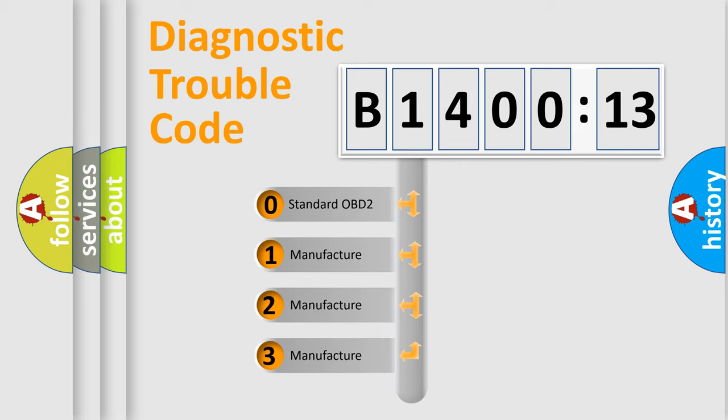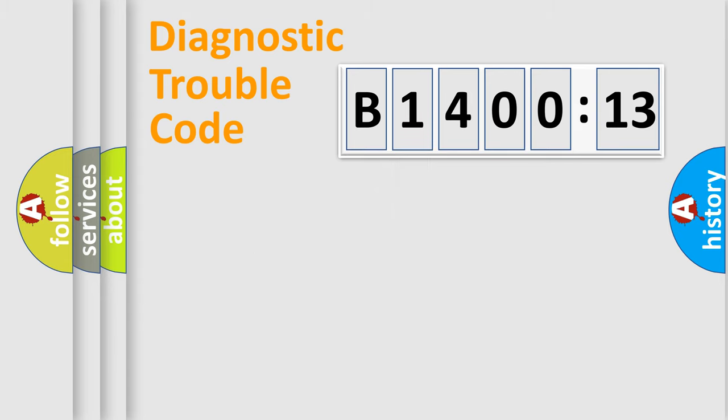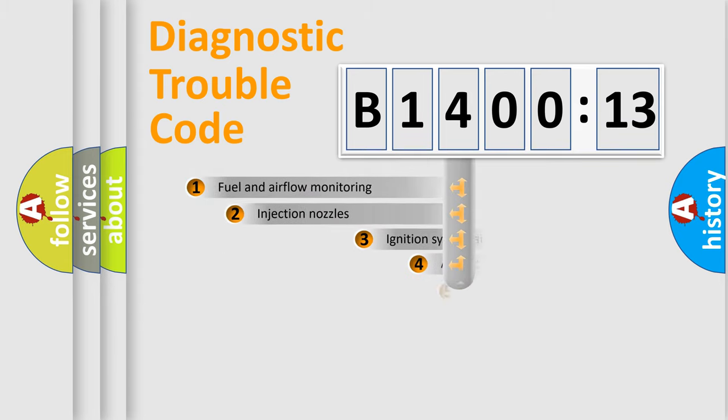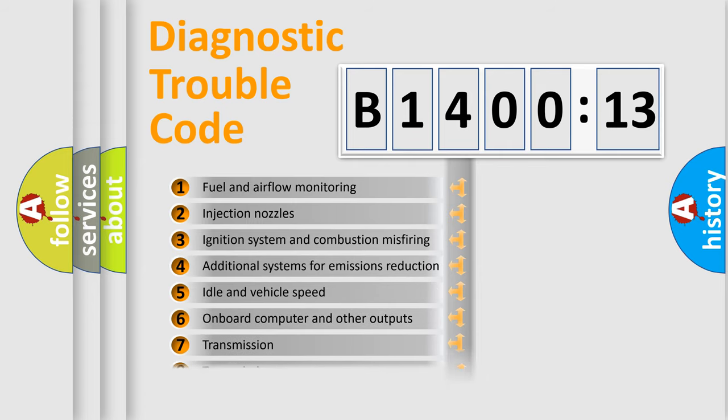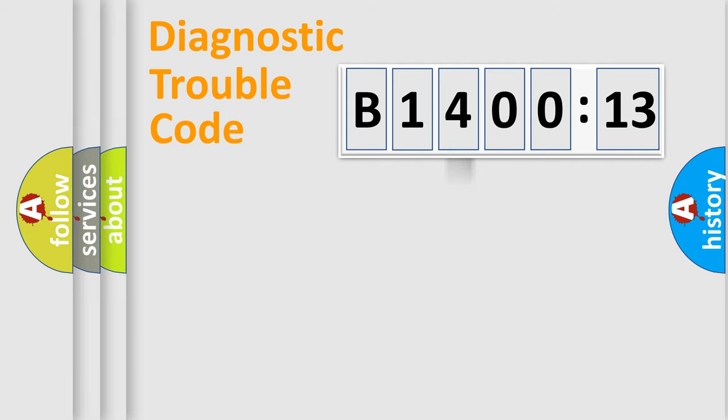If the second character is zero, it is a standardized error. Numbers 1, 2, or 3 indicate a manufacturer-specific error. The third character specifies a subset of errors. This distribution is valid only for standardized DTC codes. Only the last two characters define the specific fault of the group.